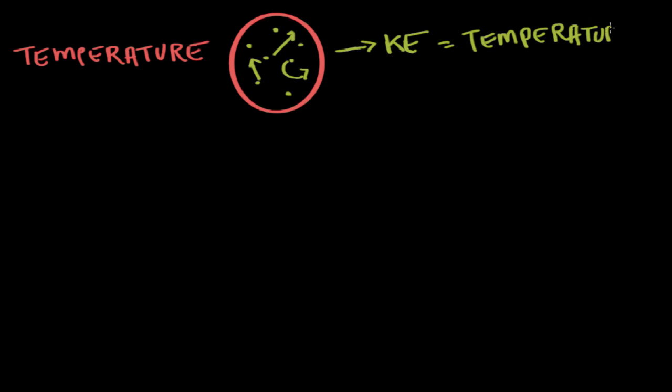Because knowing the amount of energy in a system can be really useful in chemistry and in physics, we've developed temperature scales to help us quantify or measure this value of energy. The three scales most widely used are the Kelvin scale, the Celsius scale, and the Fahrenheit scale.